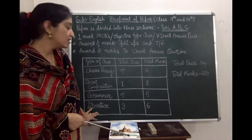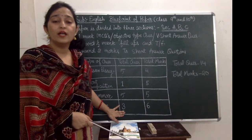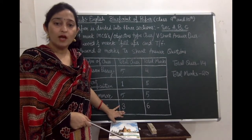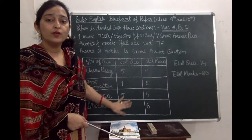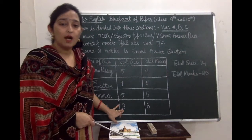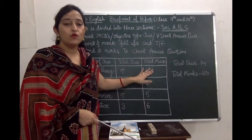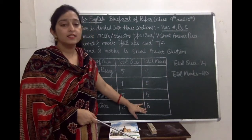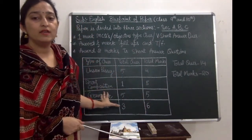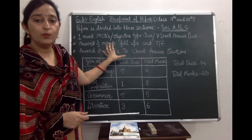For the literature portion — chapters and poems you have completed — you will get short answer type questions. There will be three questions, each carrying two marks, giving a total of six marks. So the total adds up: four plus five plus five plus six equals twenty marks.